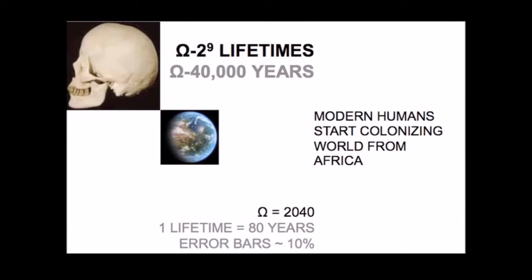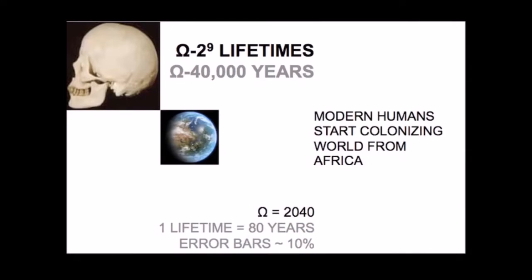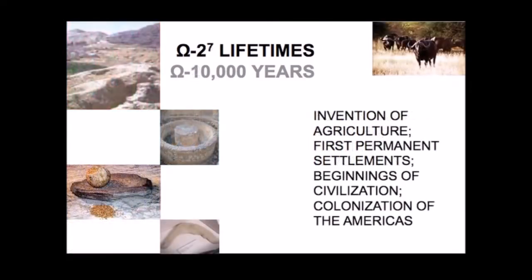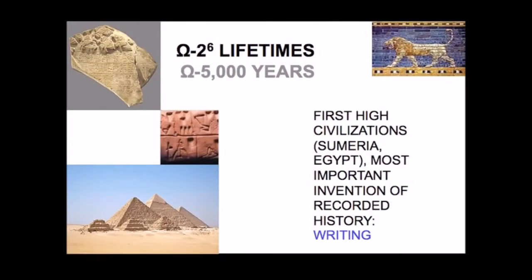One lifetime is 80 years, and the error bars are in most cases much smaller than ten percent. Two to the ninth lifetimes ago — 40,000 years ago — Homo sapiens sapiens comes into existence and colonizes the world. Take half of that and we hit the invention of long-distance weapons like the bow and arrow, and the hunting revolution. Take half again and we hit exactly the beginnings of civilization — the invention of agriculture, the first permanent settlements. Take half of that and it's exactly the first high civilizations in Sumeria and Egypt, and the most important invention of recorded history: writing, 5,000 years ago.